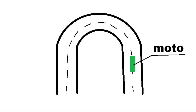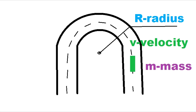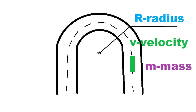Here is our motorcycle — this green brick. The rider wants to turn, and the motorcycle has its own characteristics: mass and velocity. The turn itself has a specific radius. When something turns, the centrifugal force starts to act on the object. I've named that centrifugal force 'A', acting on the object.